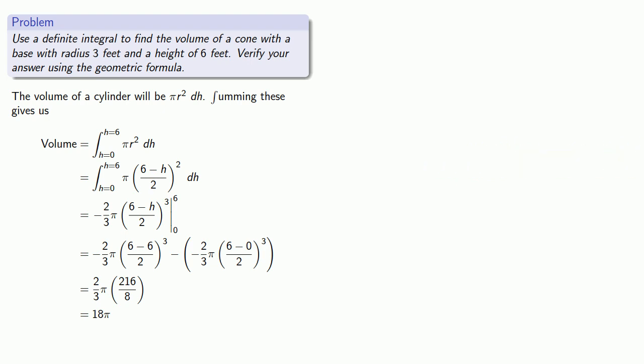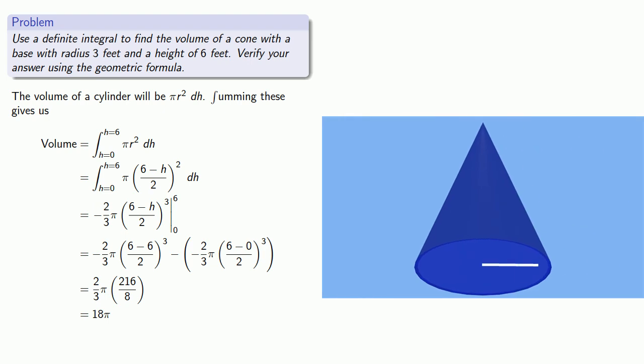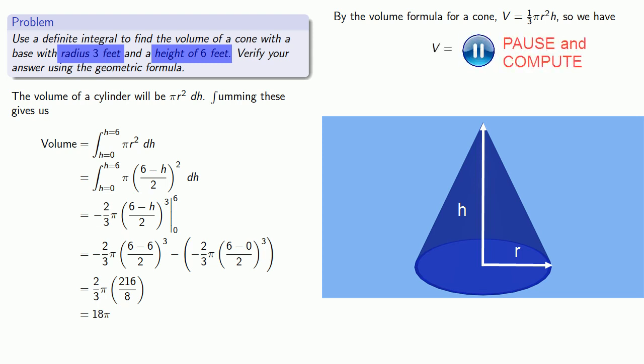We do have a volume formula for a cone. Volume equals one third π r squared h. So we can calculate the volume directly. We know the radius of the cone. We know the height of the cone. So we'll substitute those into our volume formula. And find that we do get 18π as our volume.